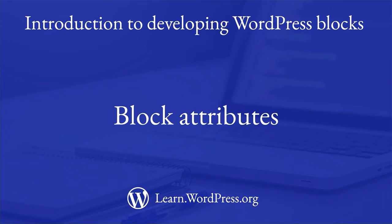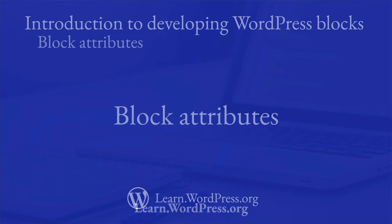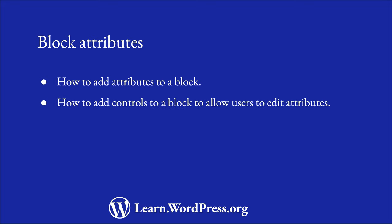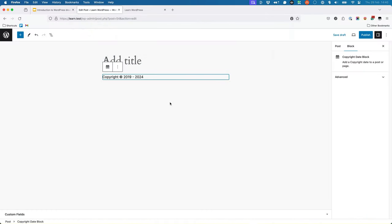One of the benefits of building blocks is the ability to allow users to control the block's appearance and behavior via block attributes. Let's learn how to add attributes to a block and how to add controls to your block to allow users to change those attributes. Attributes are the properties of the block that can be controlled by the user. For example, for the copyright date block, the starting year would be an attribute that the user can change.